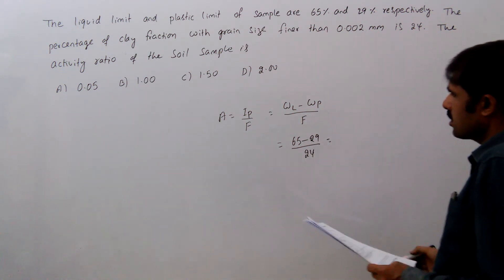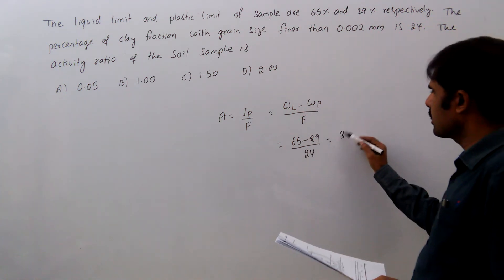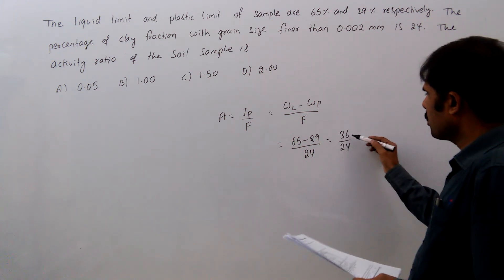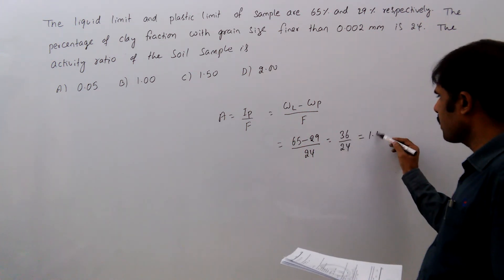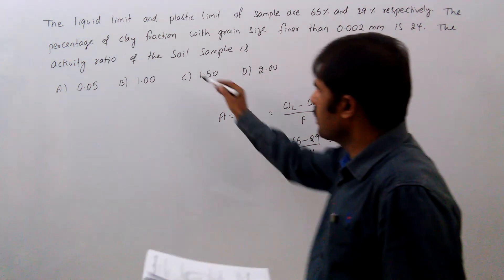That equals 65 minus 29 is 36, divided by 24, which is 1.5. So 1.5 is the activity ratio.